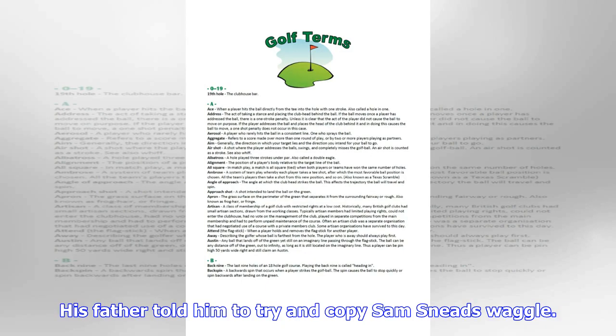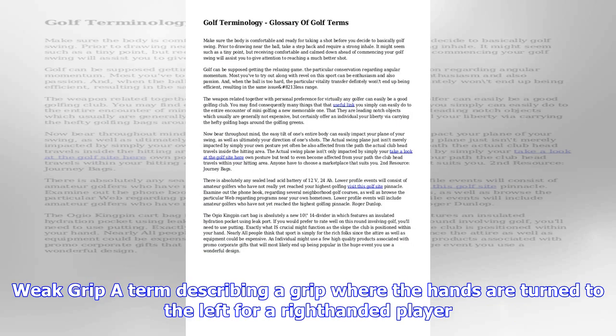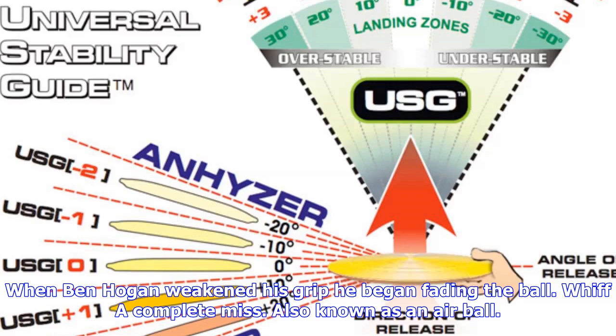Smothered hook: a low, right-to-left shot that dives quickly to the ground. The cause is an extremely closed club face. He hit a smothered hook from the tee, and the ball splashed into a nearby pond.